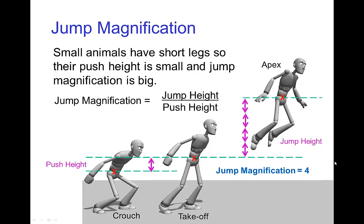It's unusual for a human to have a jump magnification that is as large as four, as in this figure. But for a small animal like a cat, a jump magnification of four or even more would not be so unusual.